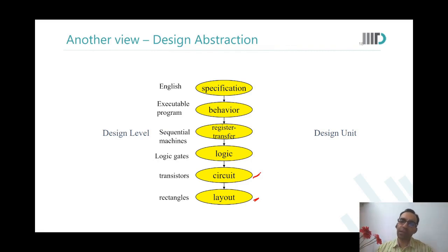In terms of design level, the language used for specification is common English. Behavioral description is typically a high-level code, which is an executable program. RTL is a sequential machine representation of the design. You synthesize the RTL and come to the stage of logic gates. Those logic gates are actually implemented using transistors. And these transistors are actually implemented on silicon in the form of a layout, which appears to be sets of rectangles overlapping one over the other to create transistors.